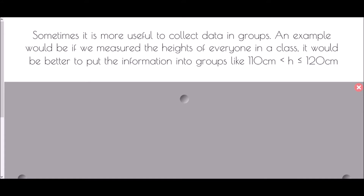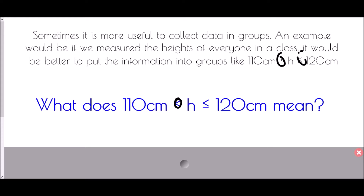The question is: what do these symbols mean? The key is that this symbol does not have a line underneath it, which means it's an inequality — we are ranging from 110 to 120, but because we don't have a line on this side, we can't include 110. Because we do have the line underneath this one, we include 120. So any person who was 110-point-something all the way up to exactly 120 centimeters would be in this group. If somebody was exactly 110 centimeters, they would have been in a previous group.